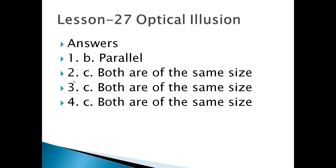Number 3 — same thing. Both lines are of the same size, but line AB looks a little longer. Number 4 — also the same thing. Some lines look longer than others. Lines AB and CD are there, and CD looks smaller than AB, but both are of the same size. So these are called illusions.